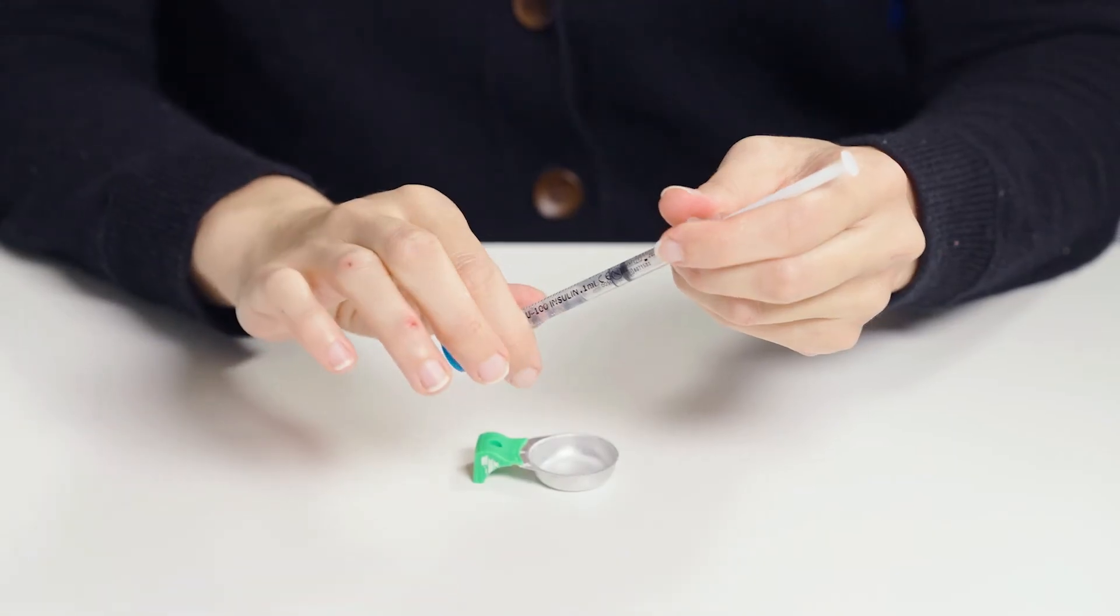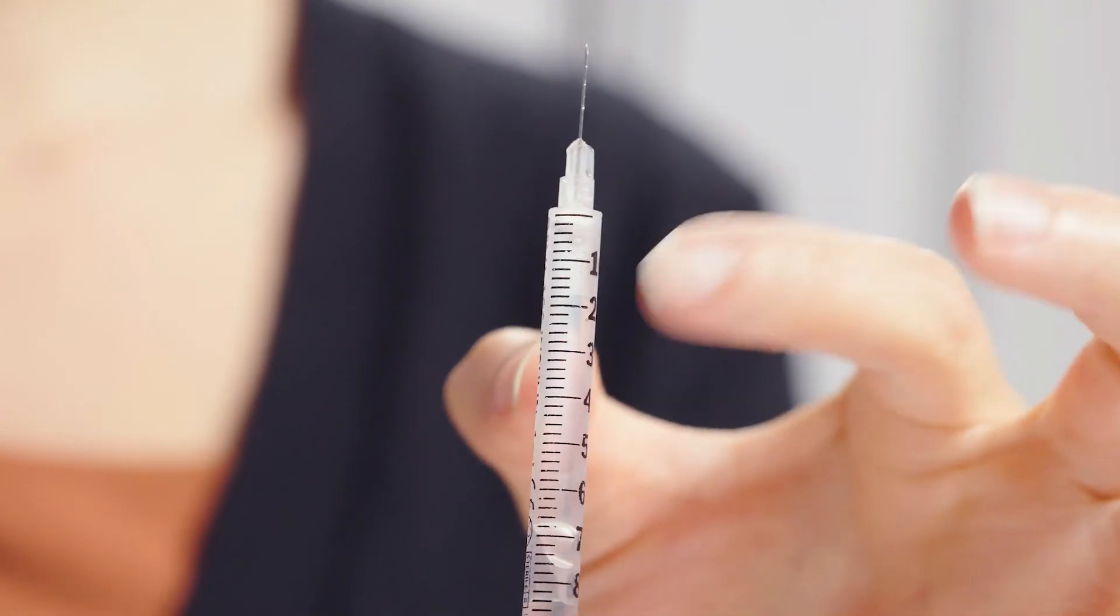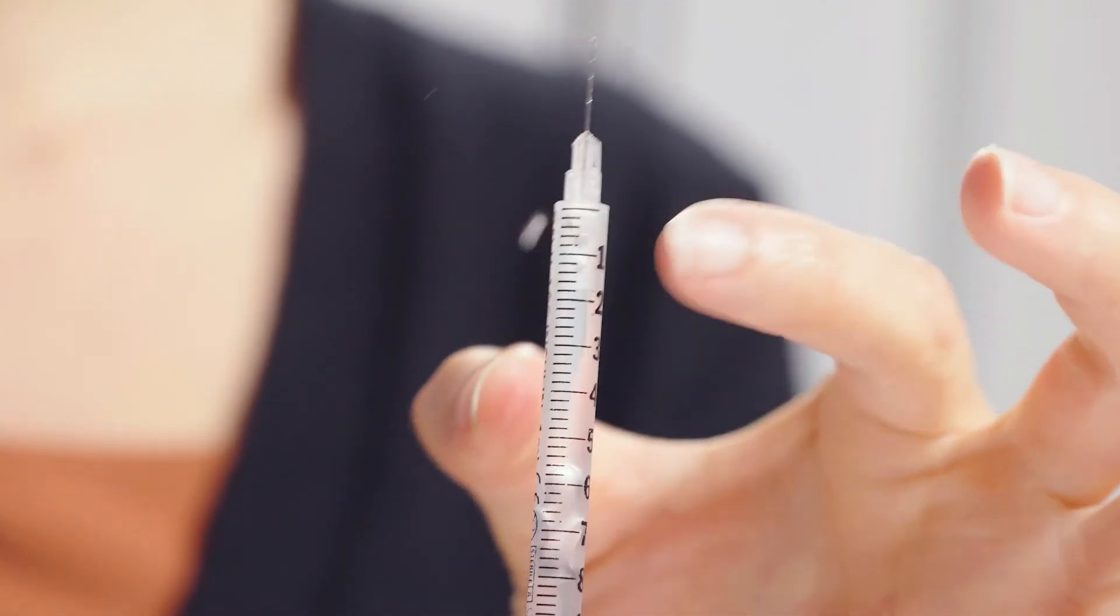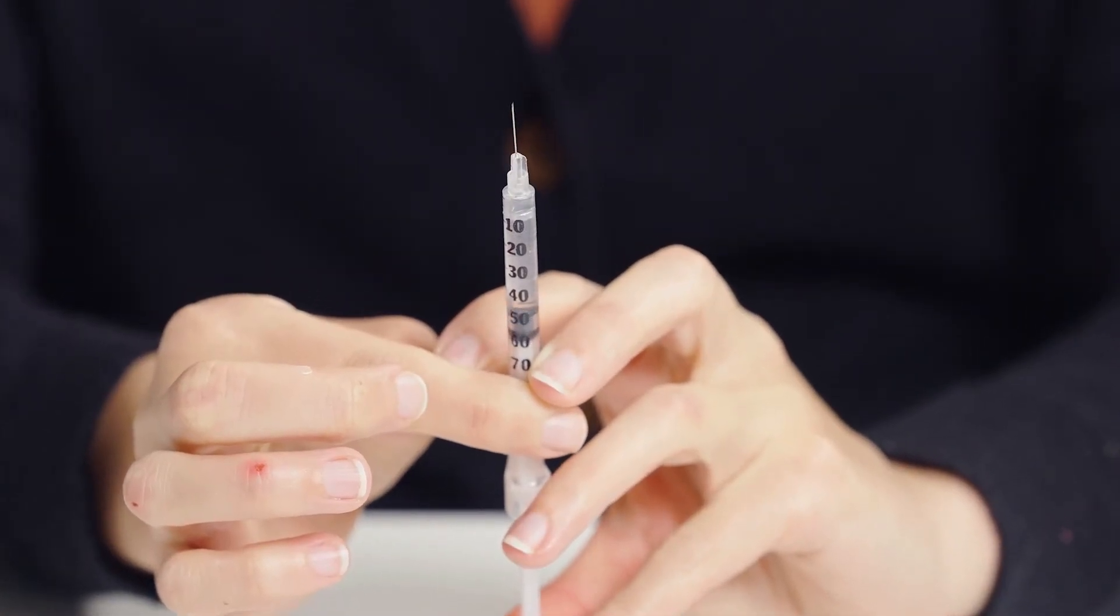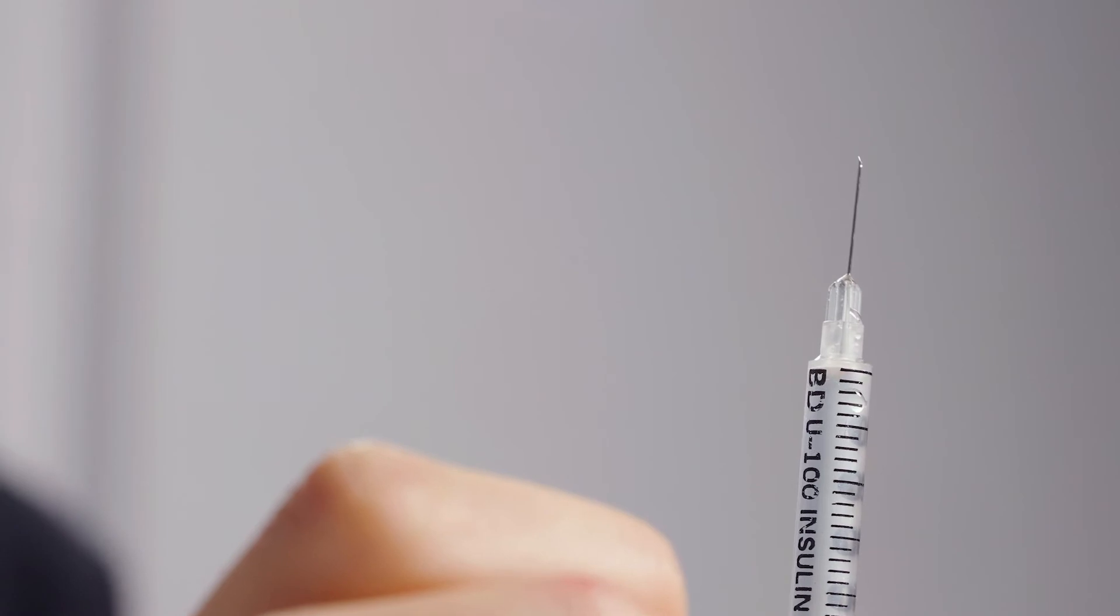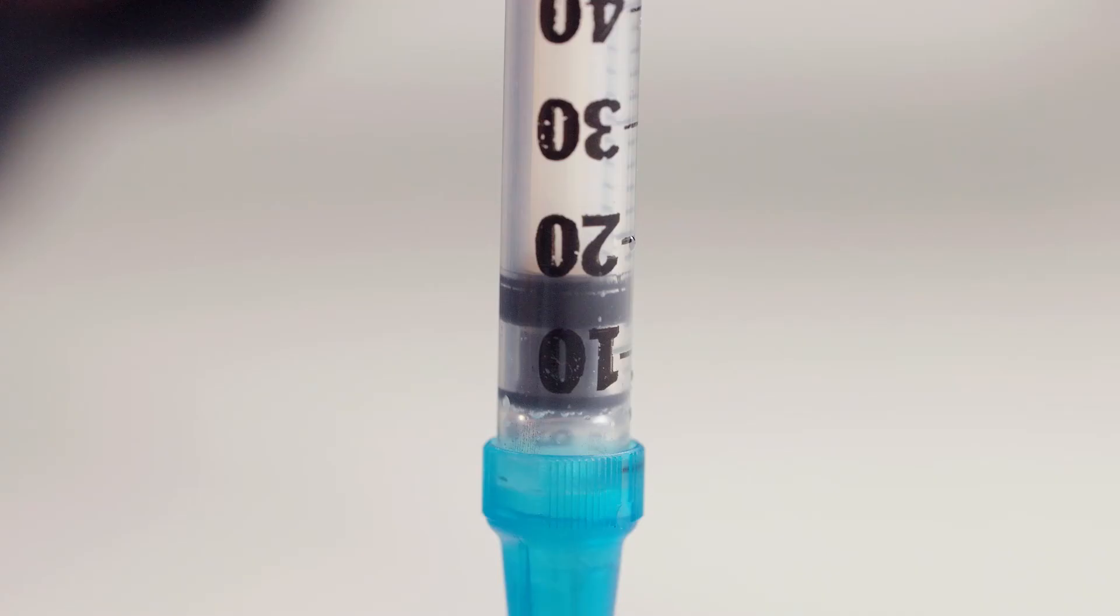The SteriFilt can now be removed and discarded. It is necessary to remove any air bubbles before using the syringe. To do so, hold the syringe vertically with the needle pointing upward, tap on the syringe to make the bubbles rise, and then expel them with the plunger. The filtration process is now complete.